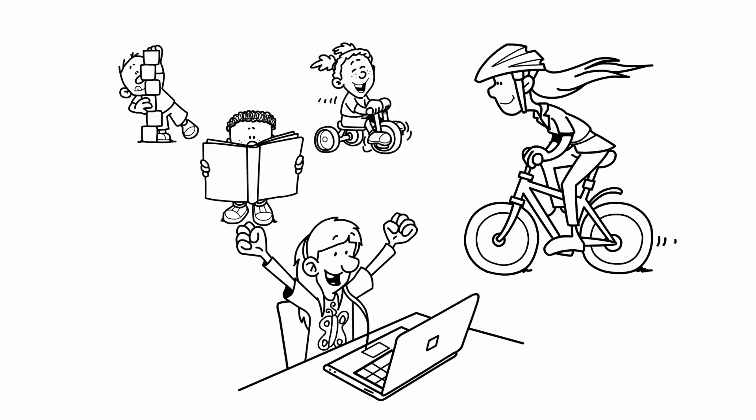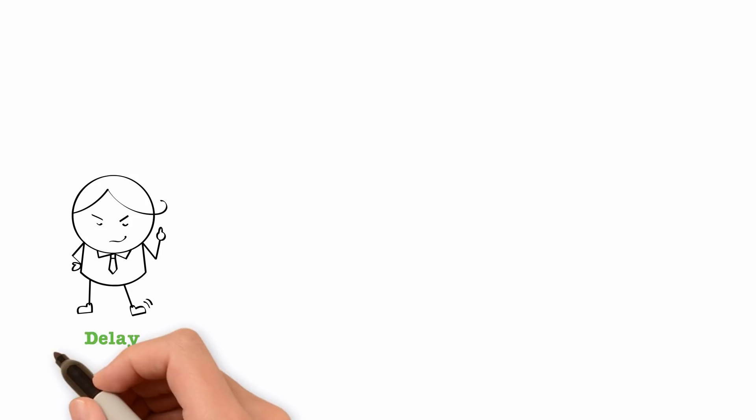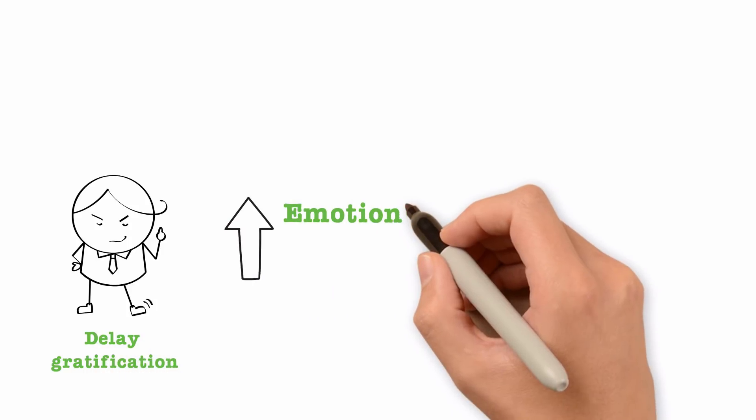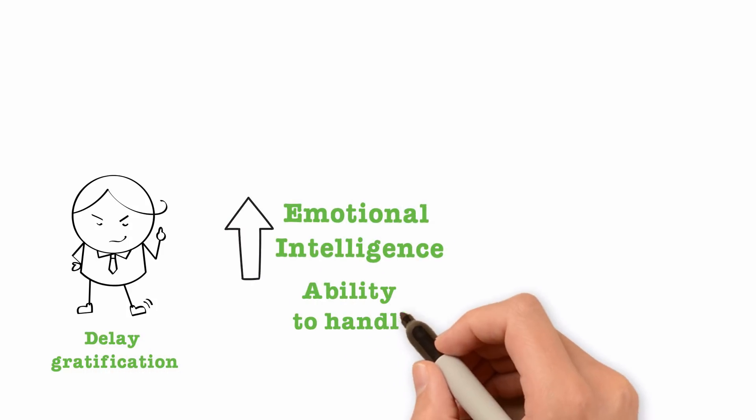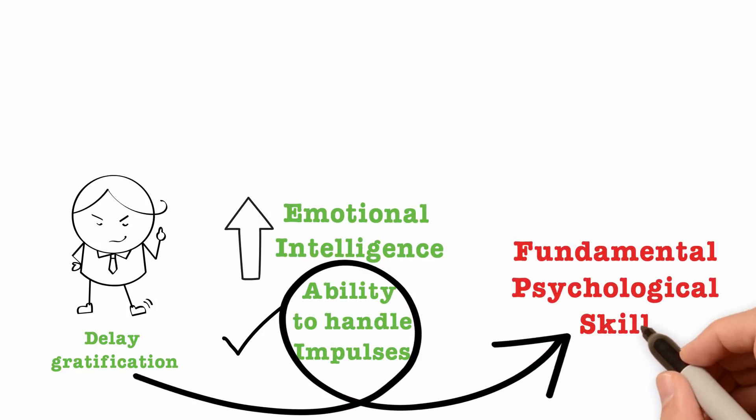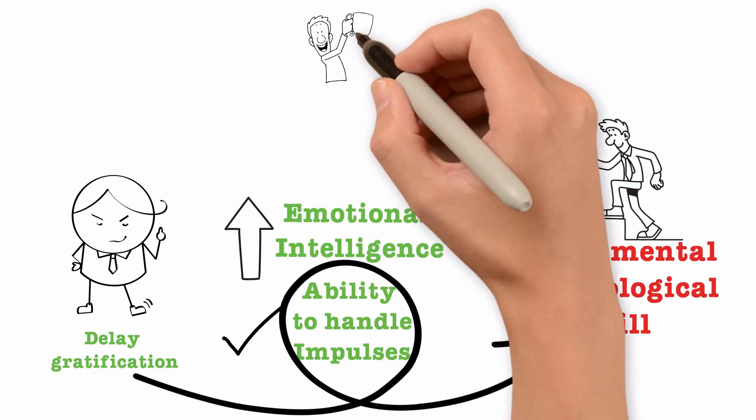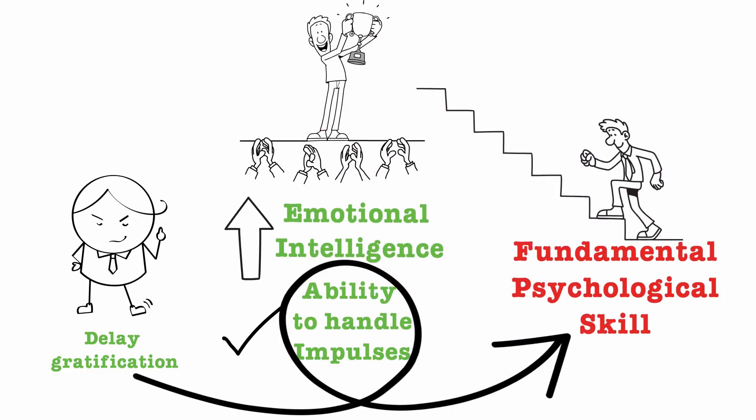Here are the implications of the marshmallow test: these kids who were able to delay gratification had emotional intelligence. They were able to handle impulses, and being able to handle impulse is one of the most fundamental psychological skills. They were able to deny impulses in order to serve their long-term goal, and that ability is crucial to long-term success.